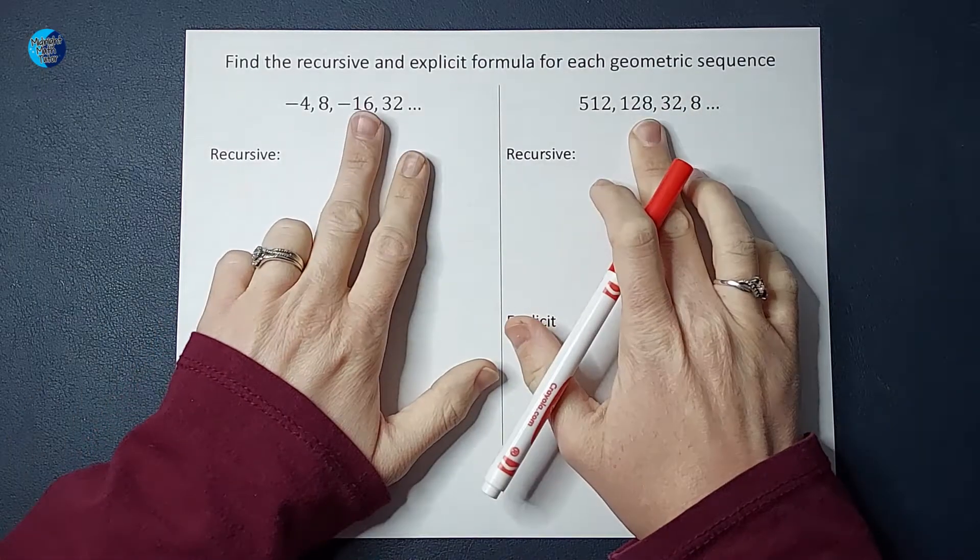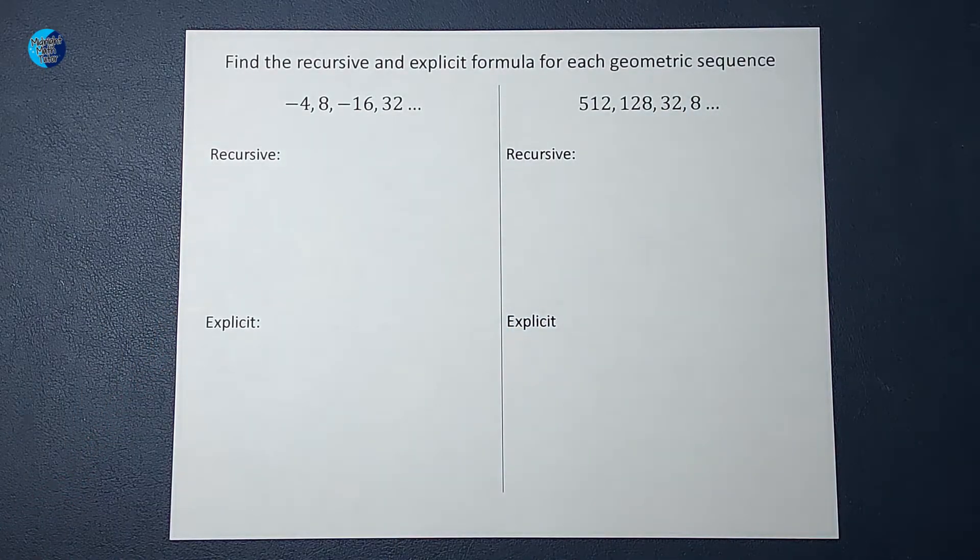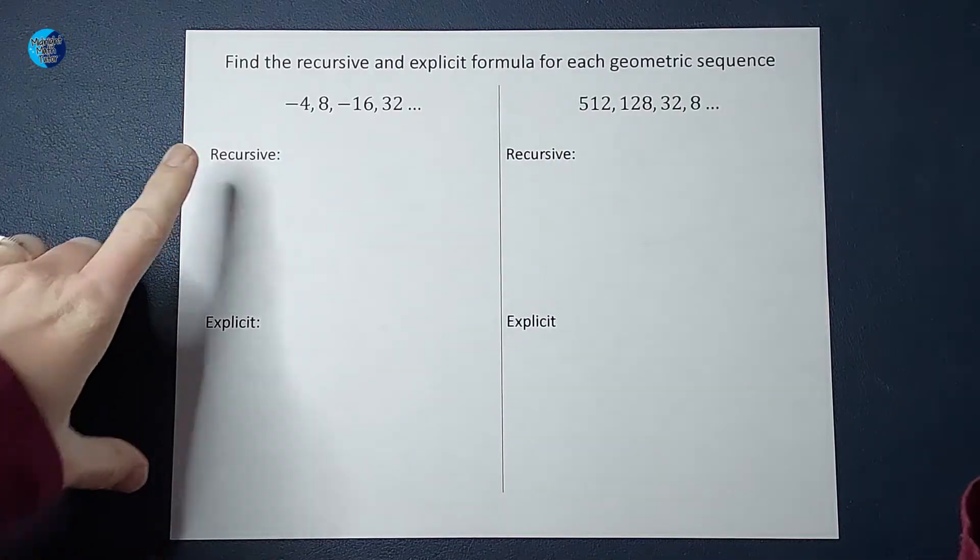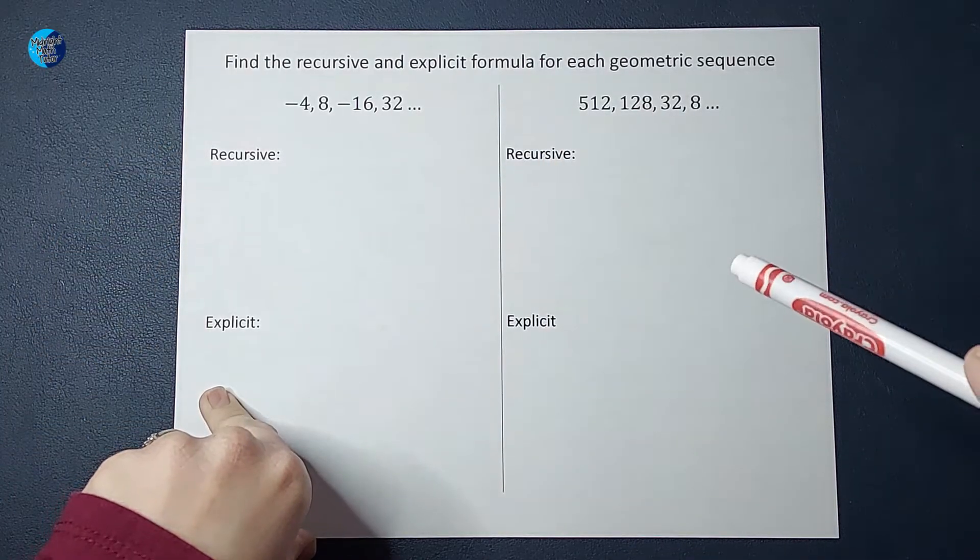Hey guys, we are looking at two geometric sequences and we want to figure out the recursive and explicit formulas for each of them.